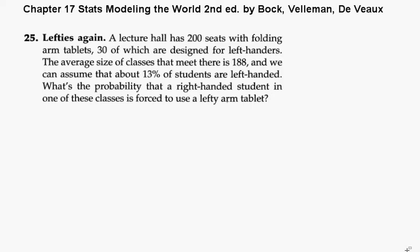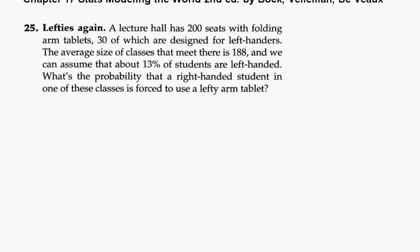This is problem 25 from chapter 17 of the textbook Stats Modeling the World, 2nd edition. This problem is about left-handers. If you've been doing the problems in the chapter, you see there's been a series of left-handed type questions. So here we have a lecture hall with 200 seats, with folding arm tables, 30 for left-handers.